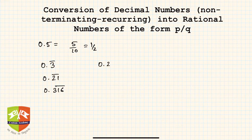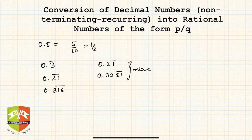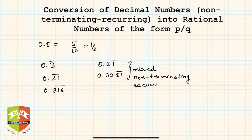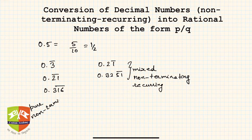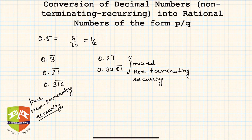Numbers like 0.21 bar or 0.3251 bar where some non-repeating digits come before the repeating part are called mixed non-terminating recurring decimals. The ones where all digits after the decimal repeat are called pure non-terminating recurring decimals.